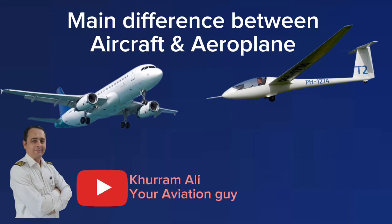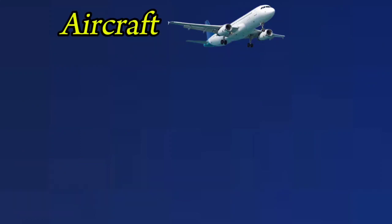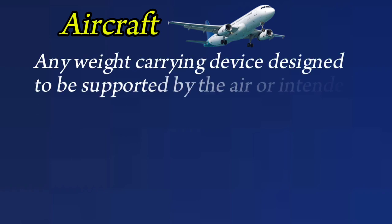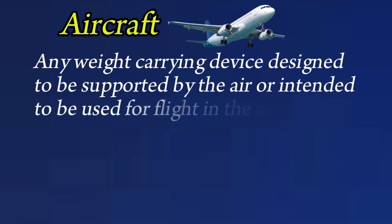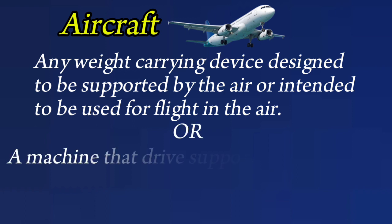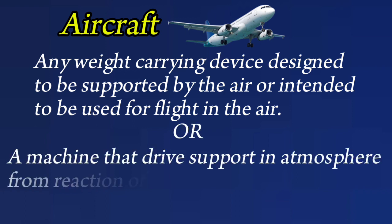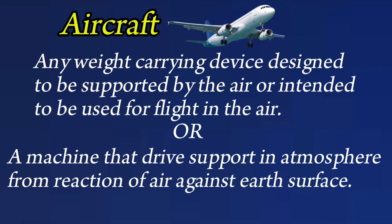The main difference between aircraft and aeroplane: an aircraft is any weight-carrying device designed to be supported by the air, or intended to be used for flight in the air, or a machine that derives support in the atmosphere — not from reaction against the earth's surface.